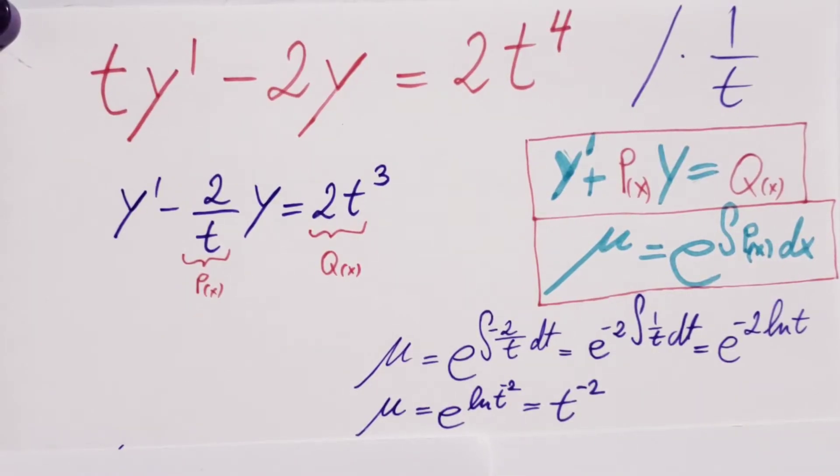Okay, let's proceed and find our integrating factor. So here it is. My integrating factor is equal to e to the power of integral, what we have here. The negative comes with it. So negative 2 over t dt. The negative 2 comes in front of the integral. So 1 over t stays in there.